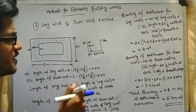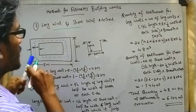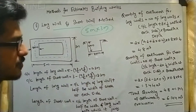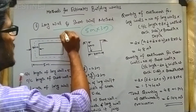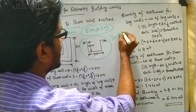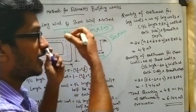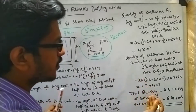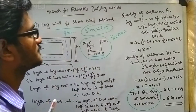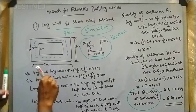To explain the long wall and short wall method, we will consider a small example. Here you can see a 5 meter by 3 meter earthwork excavation portion. A plan is given with dimensions 5 meter by 3 meter, and a section related to this plan is also shown. The thickness is given as 80 centimeter and the depth is given as 60 centimeter. We have to identify the total quantity of earthwork in excavation using the long wall and short wall method.